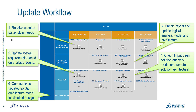So how is the change implemented? Here we see the path through the change. First, we receive the updated stakeholder needs — they can come from an external source. Then we check the impact and update the logical analysis model and architecture. In our case, we do flow analysis: how long it takes for a given tank to deplete at a given mass flow rate. Then we update system requirements based on analysis results and logical architecture changes. Based on that, we check the impact on the solution architecture, run analysis to identify if it still satisfies requirements, and if we make changes, we verify they satisfy requirements. Then we communicate the solution architecture by exporting to the detailed design.